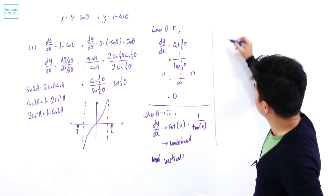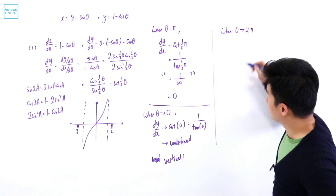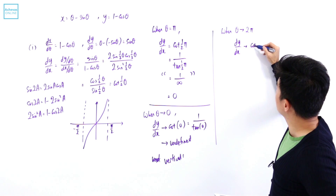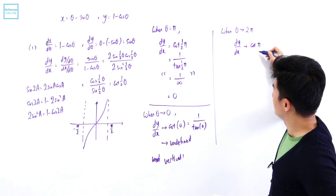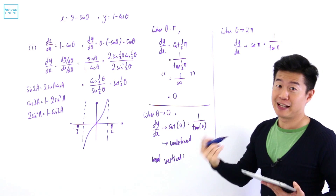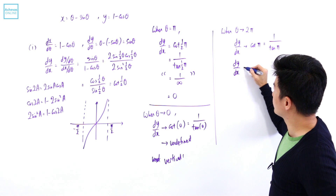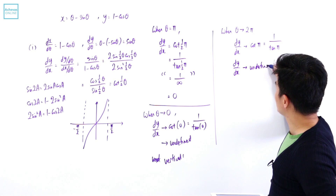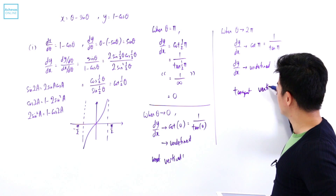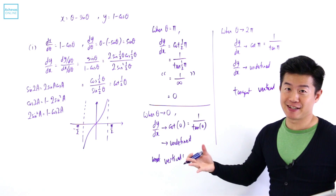Now the other scenario: when theta tends to 2pi, dy/dx tends to cotangent of half of 2pi, so cotangent of pi, which is 1 over tangent of pi. Tangent of pi is also 0, so dy/dx also becomes undefined. It is the same scenario, and the tangent is also going to be a vertical line, because only a vertical line will have dy/dx as undefined.